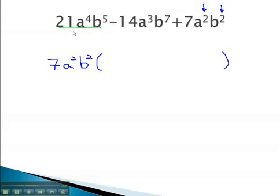This is what goes in front of the parentheses, and then we can divide each of these terms by that common factor, 7a squared b squared, all the way across.